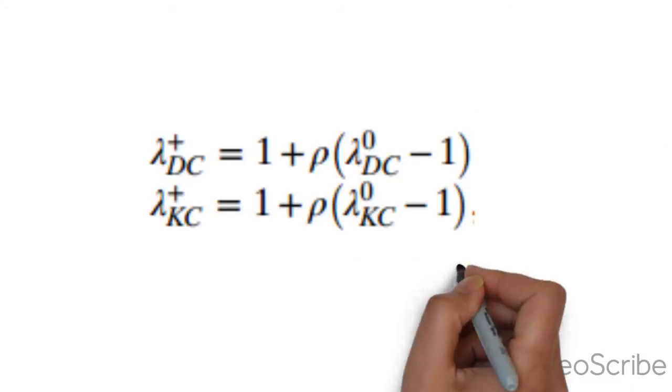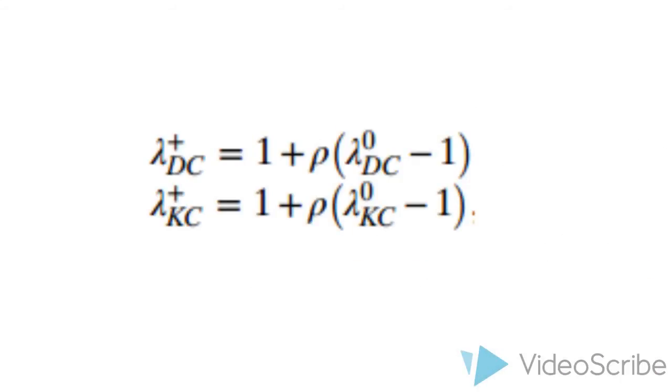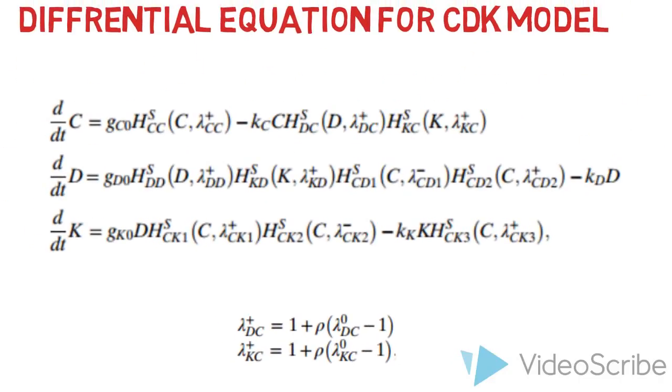Here we bring in a parameter rho, which is called the immuno-recognition parameter. The interaction of K and D with C depends upon this parameter. If this parameter is 0, that is rho equals 0, the K and D cells cannot recognize the C cells and provide the immunity. Hence, immunosystems do not function. When rho equals 1, the immuno-recognition is enabled and the C cells are recognized by the D and K.